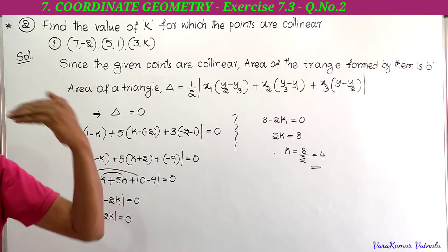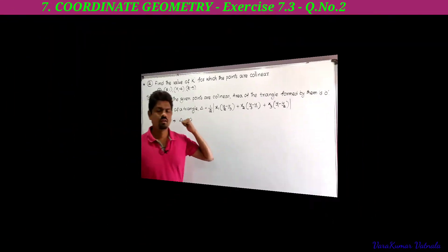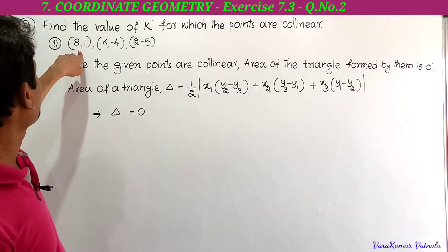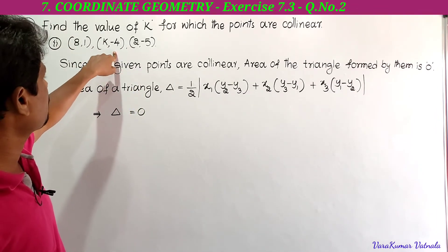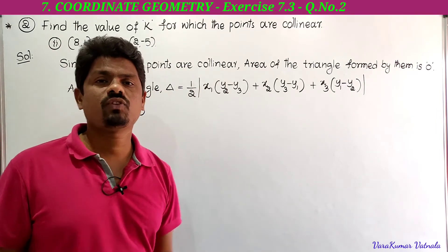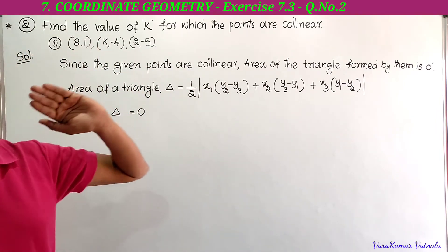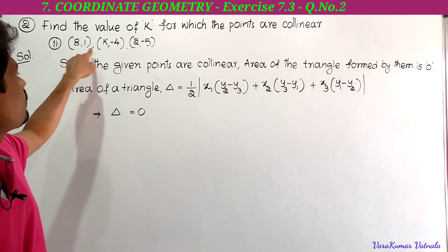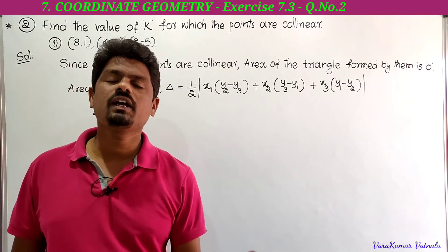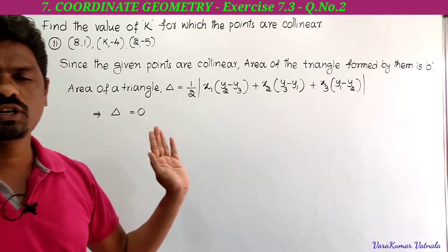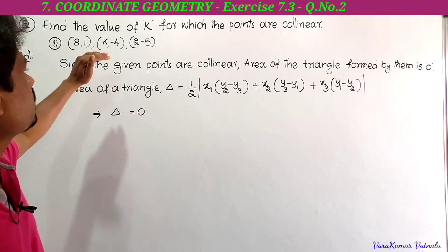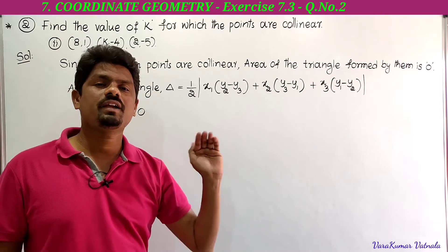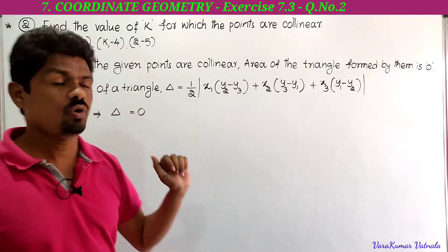Next we have to solve the second bit. The second bit gives points: (8, 1), (k, -4), and (2, -5). If the given three points are collinear, we are asked to find the value of k. If the given three points are collinear, then the area of triangle formed by them is equal to 0.